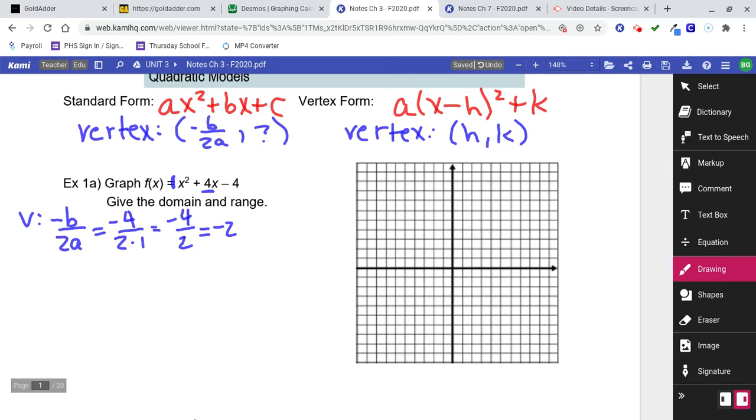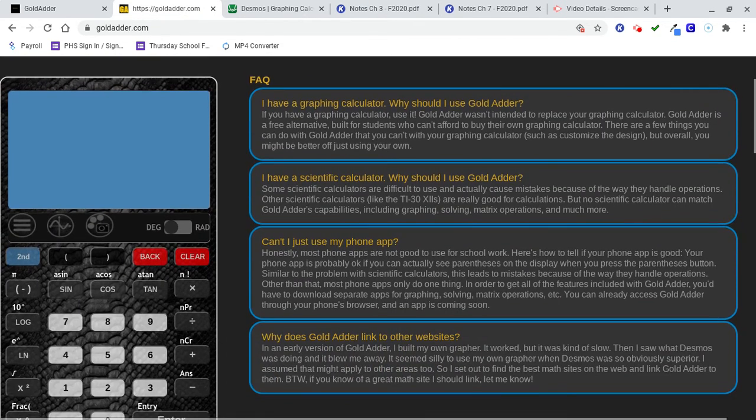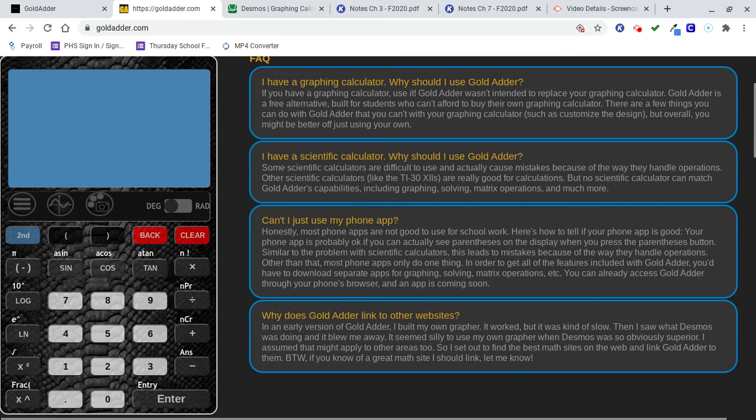So plug it into the expression. You've got negative 2 squared plus 4 times negative 2 minus 4. And if you can do that by hand, do it by hand. If you need to use a calculator, use a calculator. But by all means, use parentheses.